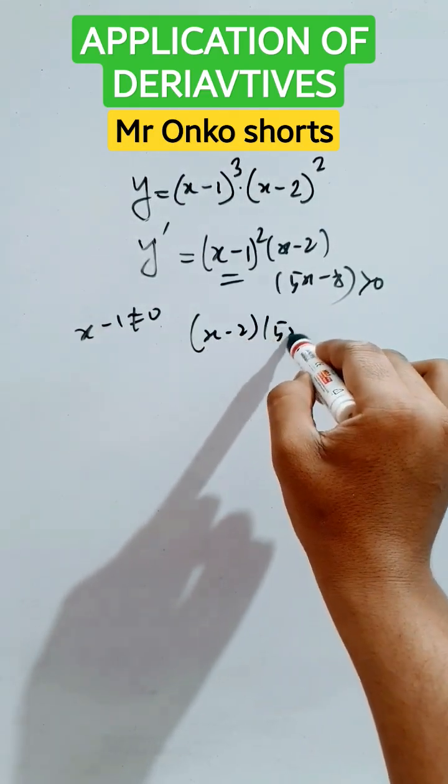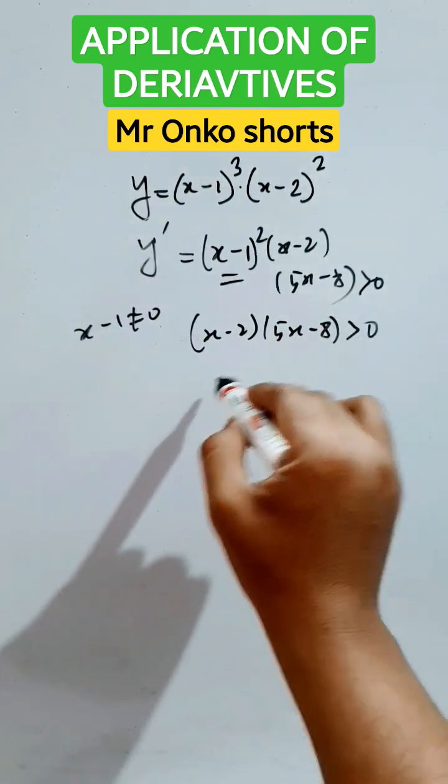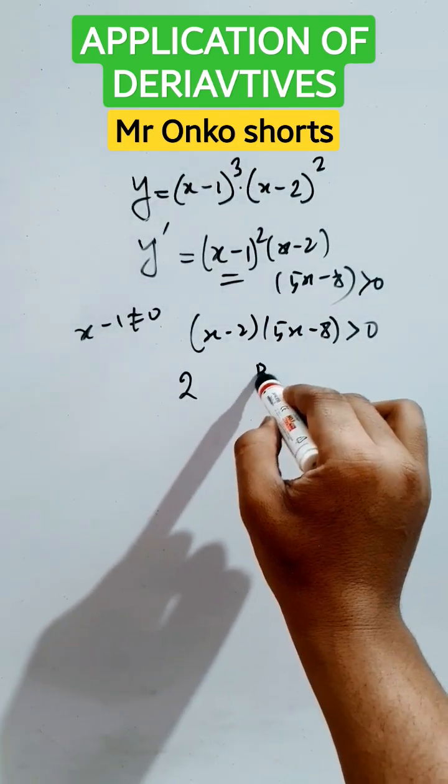We have to take (x-2) times (5x-8) greater than 0. The critical values are 2 and 8/5.